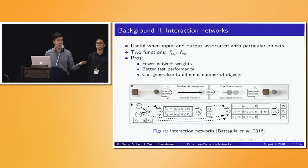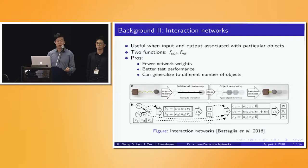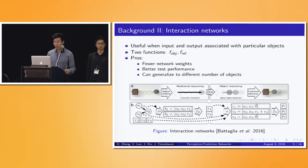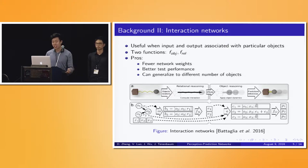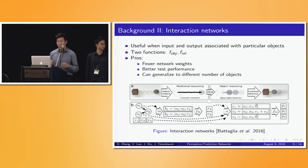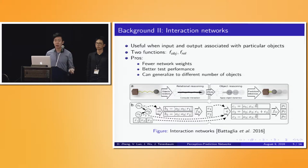Oftentimes in intuitive physics we find data in which the inputs and outputs can be associated with particular objects — state data with position and velocity vectors for each object is one such example. So it makes sense when building our model to exploit the structure in this data. One such example is interaction networks. The idea is to limit ourselves to only using two kinds of functions: object-centric functions and relation-centric functions. Object-centric functions are applied to each object and relation-centric functions are applied to each pair of objects. These functions are shared across objects and pairs of objects. The advantage of this sharing is that we reduce the number of network weights, thereby helping us achieve better test performance and also helping us generalize to arbitrary numbers of objects.